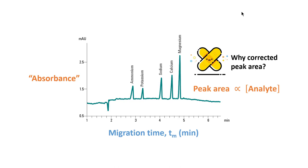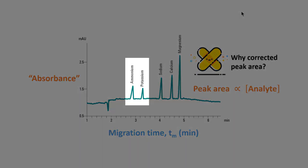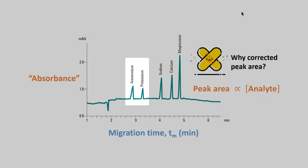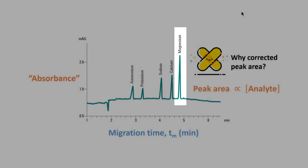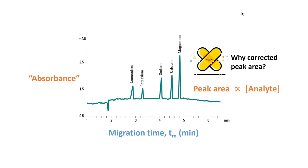So why do we need to use the corrected peak area? What is there to correct? This is because the peaks passing through a CE detector do not all pass through at the same velocity. The early eluting peaks move through the capillary more rapidly compared to the later eluting peaks. The later eluting peaks, which are moving more slowly, usually appear to have a larger peak area relative to the earlier eluting peaks. Corrected peak area takes into account the unit migration time, and therefore allows a more accurate comparison of the components in the mixture.